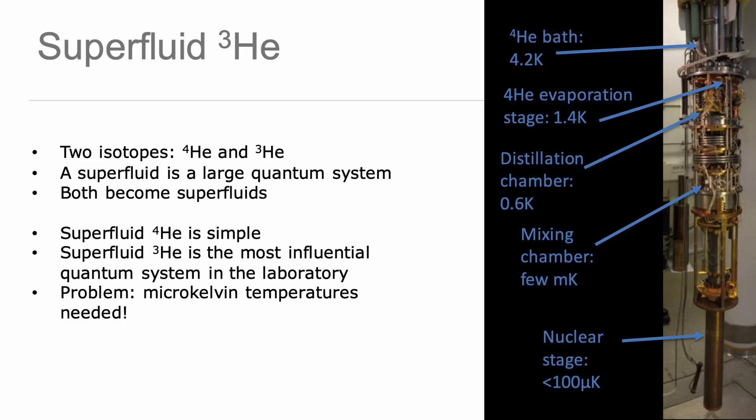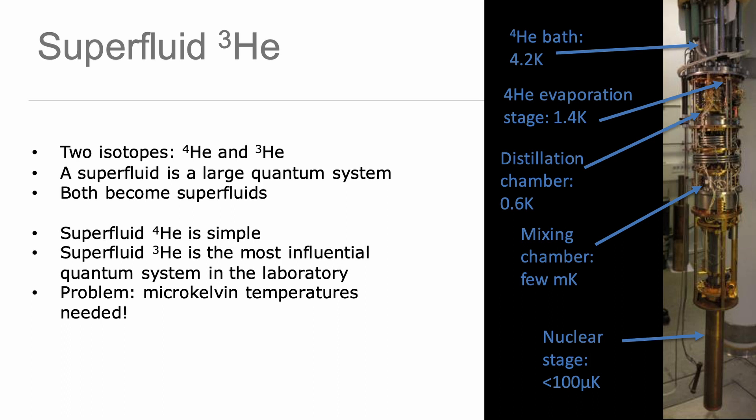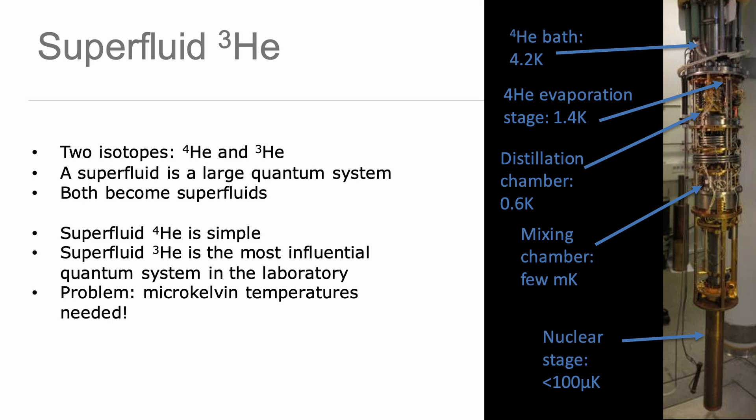Helium-4 superfluid is simple, has been pretty thoroughly investigated, and is not the topic today. Helium-3 is perhaps the most influential large quantum system in the lab, and there are plenty of things in this system that we still don't understand. To get helium-3 to the superfluid state you need to cool it down to preferably microkelvin temperatures, some millions of a degree above absolute zero.